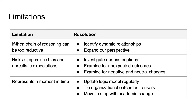Here are some limitations of logic models. First, the if-then chain of reasoning may be too reductive. We could address this by identifying dynamic relationships and expanding our perspective to a broad range of stakeholders, activities, and contexts. Secondly, the logic model focuses on expected outcomes with risks of optimistic bias and unrealistic expectations. To address these tendencies, we need to investigate our assumptions and examine for unexpected outcomes, plus negative and neutral changes. Thirdly, a logic model represents a moment in time. As our work and community change, the logic model requires updating. We need to closely align with user outcomes to move in step with broader academic change.